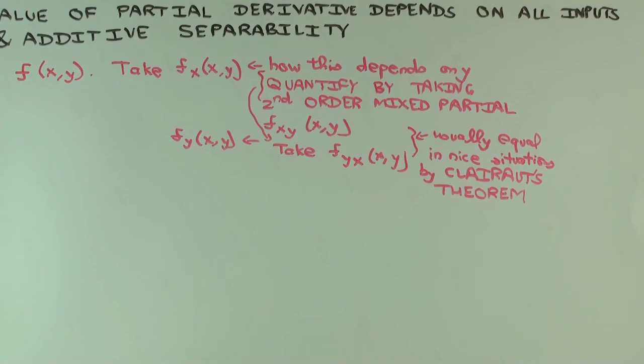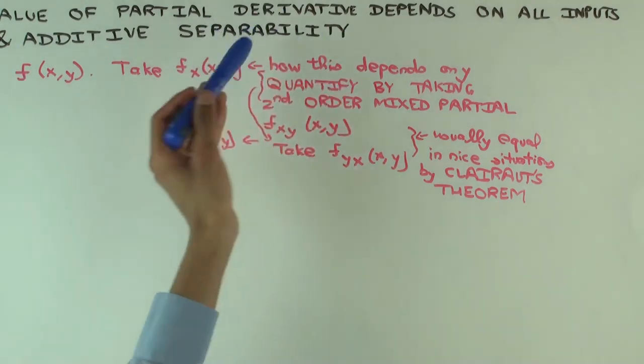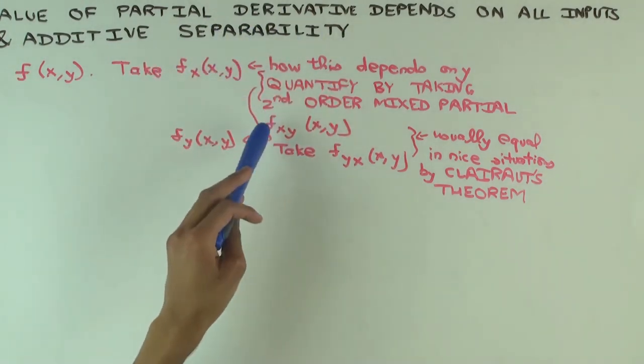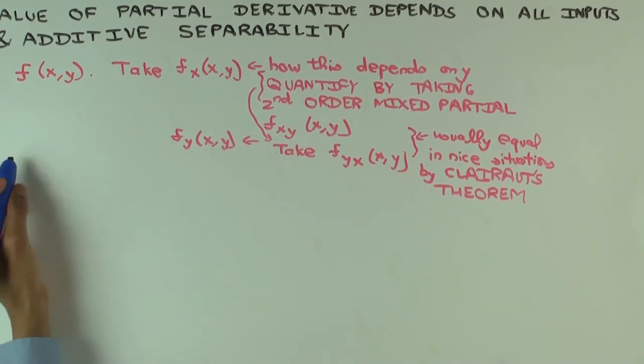For now, I want to consider another aspect of this, which is the situations where the value of the partial derivative doesn't depend on the other input. That's saying the situations where these mixed partials are what? Zero. If the first order partial in one variable doesn't depend on the other, that means that there's no interaction between the things and so that's saying the mixed partial is zero. I'll explain that. I'll take a simple example for two variables.